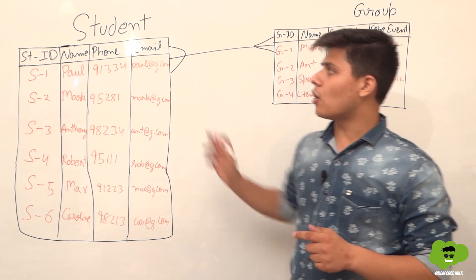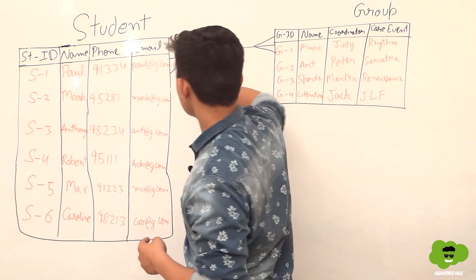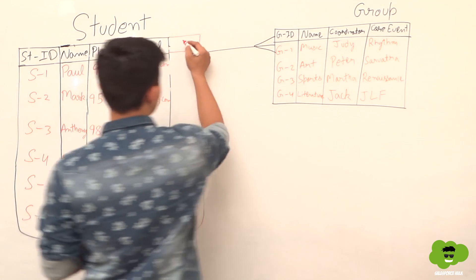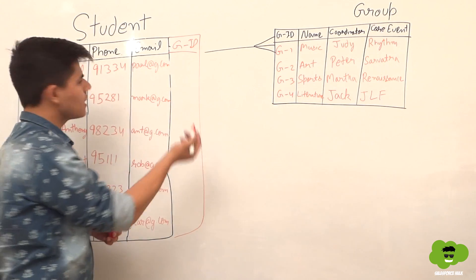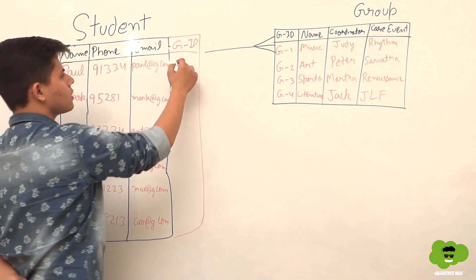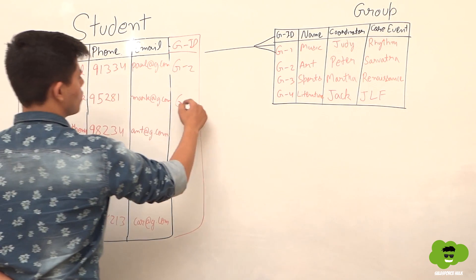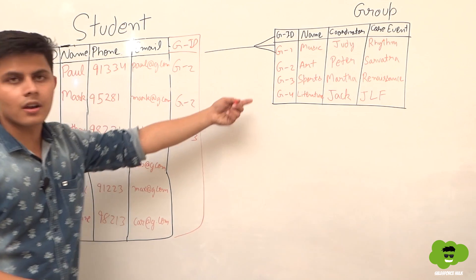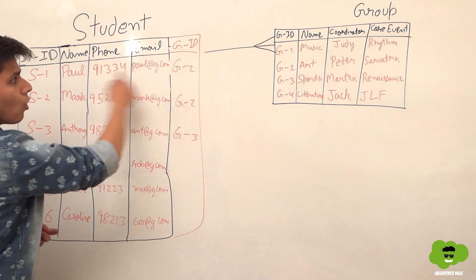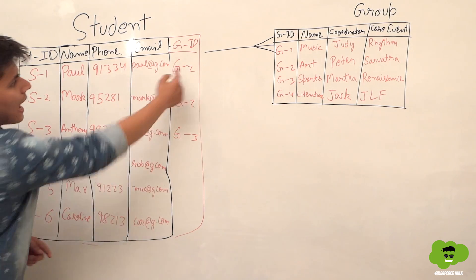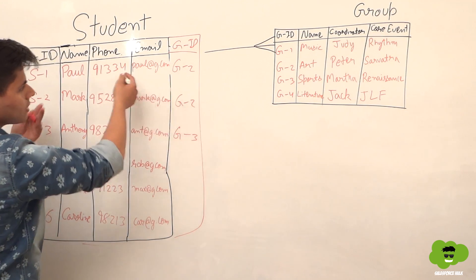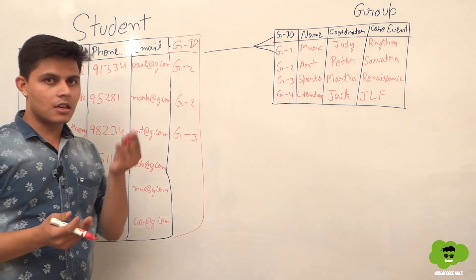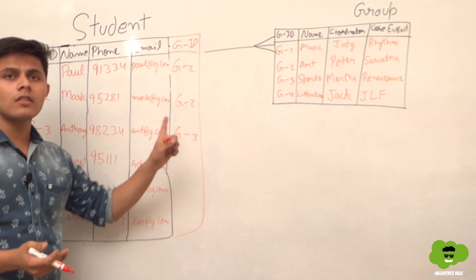If we create the relationship field on the student object, let's see what the problem is. Say Paul is in group 2, Mark is also in group 2, Anthony is in group 3, and Paul is also in group 3 or group 4. In that case, we have to rewrite the whole row and mention G3 if he's in sports as well. This information will be repeated — that's data redundancy. So we cannot create the field on the student object.